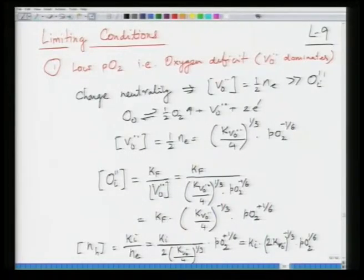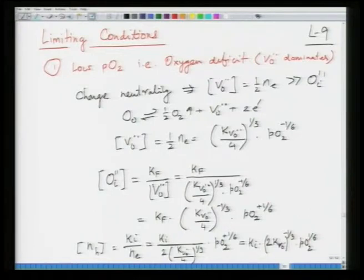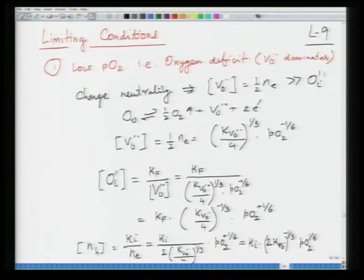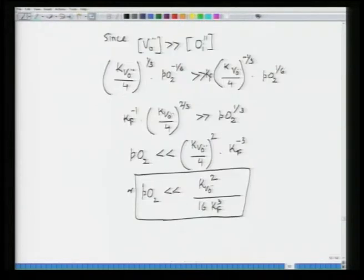Welcome to this new class. In the last class we were determining the limiting conditions to determine the equilibrium diagram of concentration versus partial pressure. The first condition we took was low pressure of oxygen, where oxygen deficiency dominates — that is, oxygen vacancies dominate. Charge neutrality gives oxygen vacancy concentration as half of electron concentration, which is much higher than interstitial concentration. This is the first limiting condition.